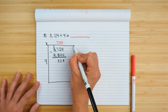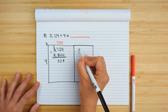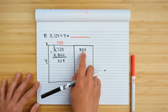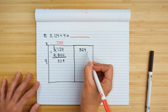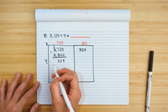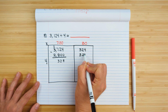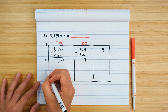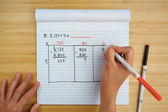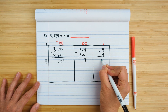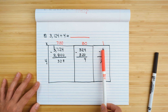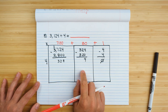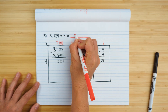324 is my remainder. I'm going to bring it over and do the process again. Four times what is close to 32? Eight — but it's not 32, it's 324, so it's 80. 80 times 4 is 320. I still have 4 left over, and four times what is close to 4? One — one times four is four. Then I add my partial quotients together and zero is left over, so there's no remainder. 700 plus 80 plus 1 is 781.